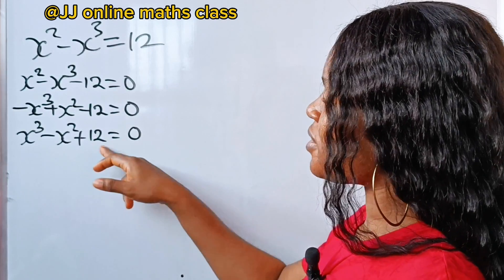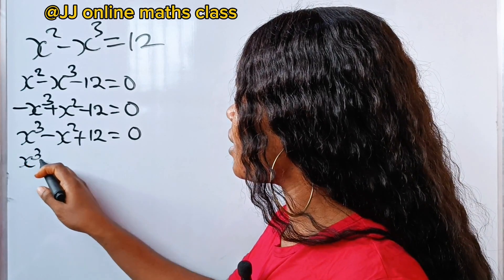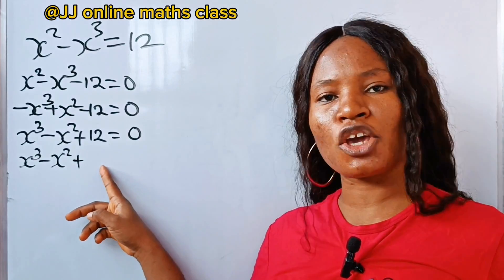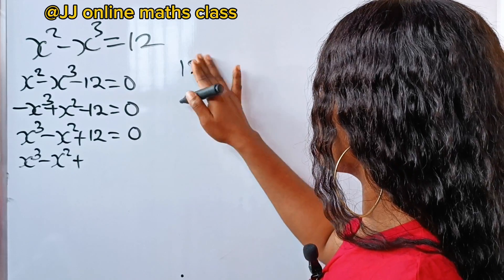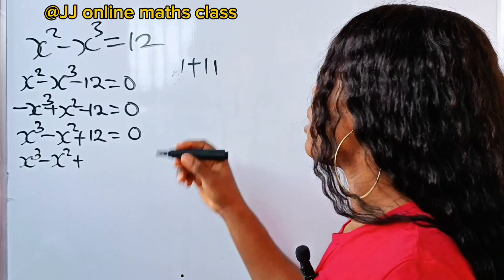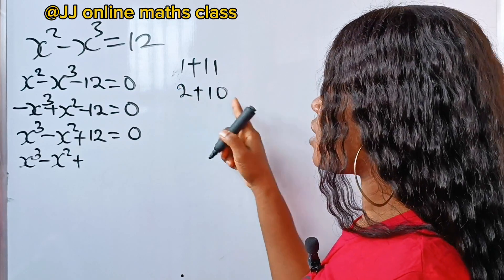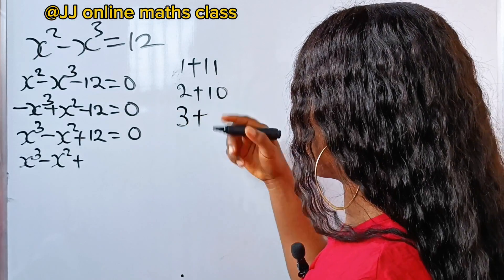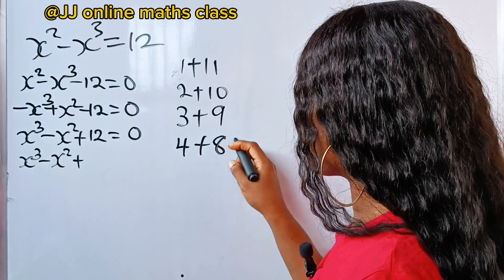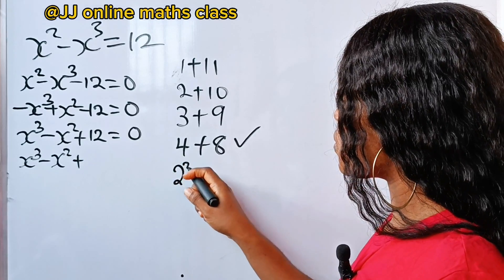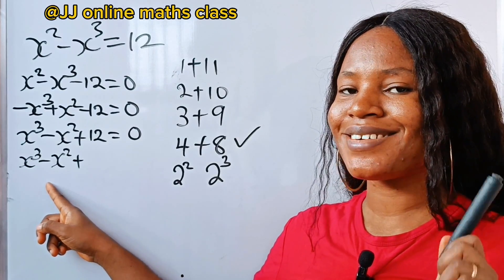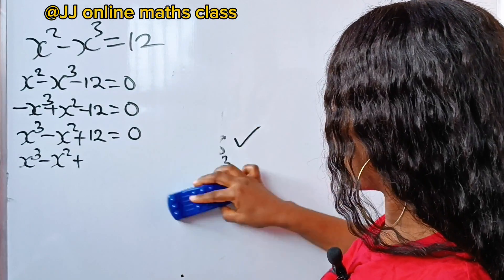Now our equation is in order. What do we do next? We need to factorize this 12 — that is where the manipulation comes in. We need 2 factors of 12 that we can get a square and a cube from. For example, 12 is 1 plus 11 — we can't get a square or a cube from those. It's also 2 plus 10, or 3 plus 9 — we can get a square but not a cube. It's also 4 plus 8, and this is what we need, because 4 can be expressed as 2 squared and 8 as 2 cubed.